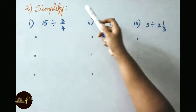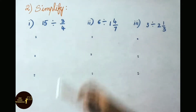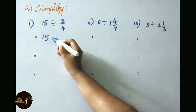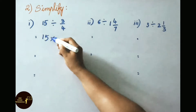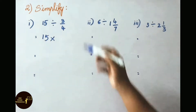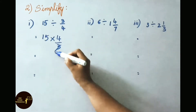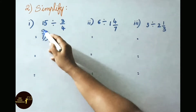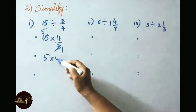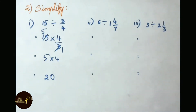See now question number 2. Simplify 15 divided by 3 by 4. Write down 15, change the division symbol to multiplication and write the reciprocal of the second fraction. Reciprocal of 3 by 4 is 4 by 3. Cancel: 3 goes into 15 five times. Now multiply the numerators: 5 into 4 is 20. So the answer is 20.